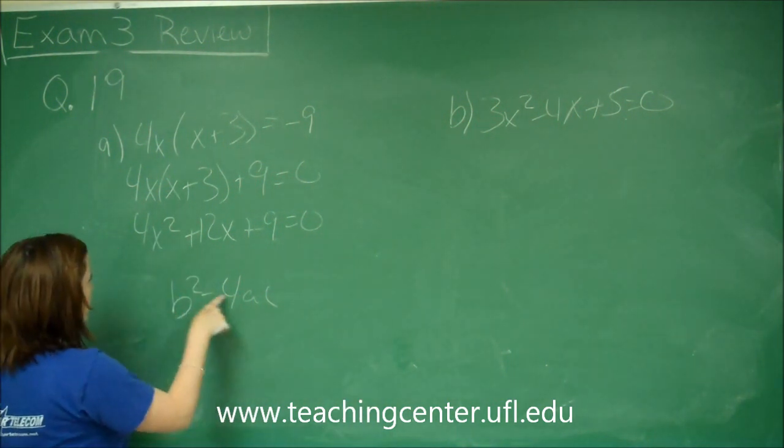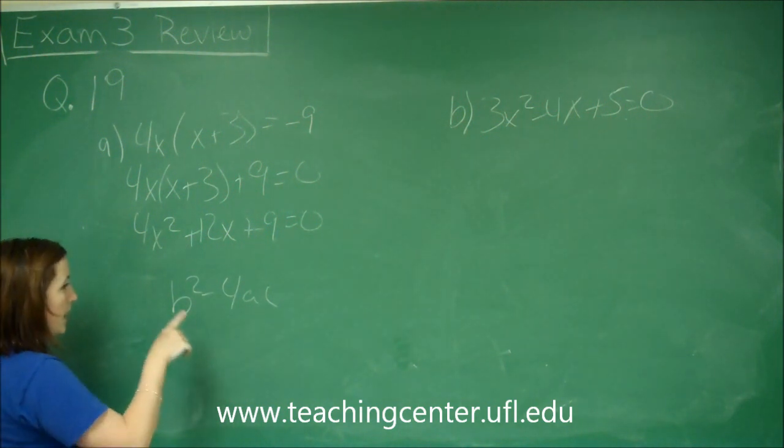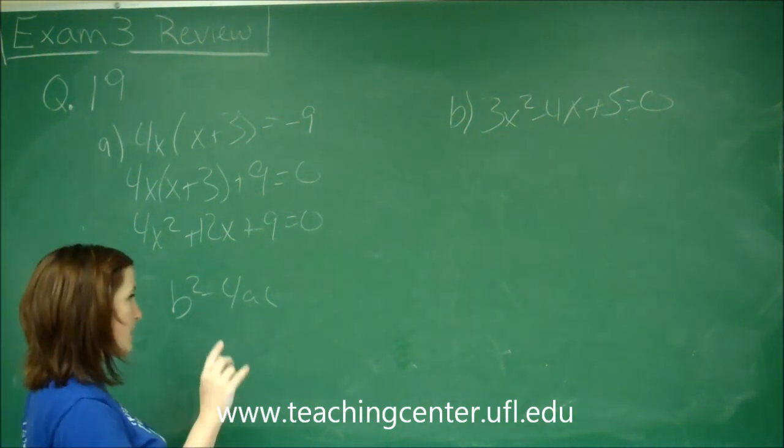Because if b squared minus 4ac is equal to 0 we have one repeated solution. If it's positive we have two distinct real solutions.